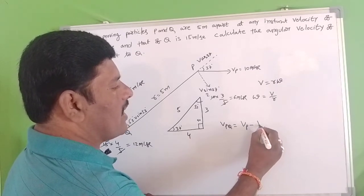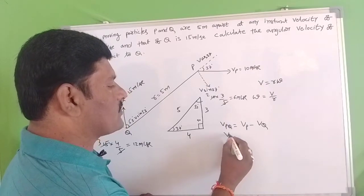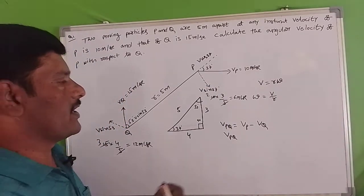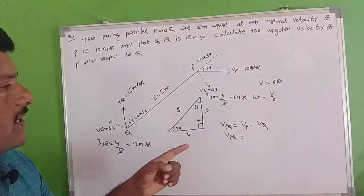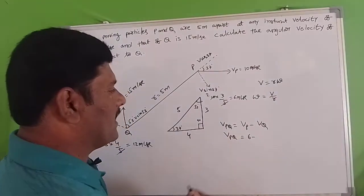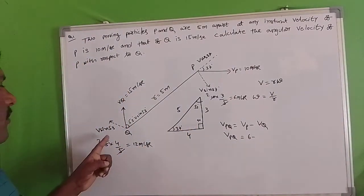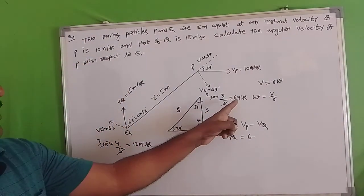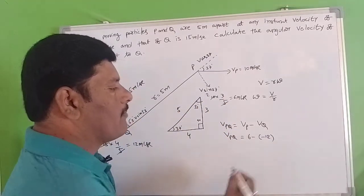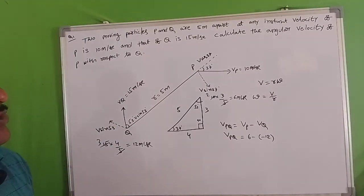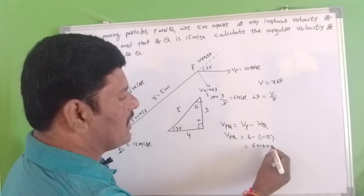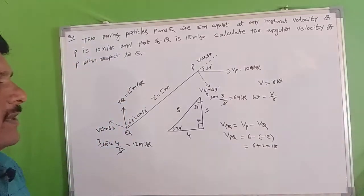Velocity of P with respect to Q: the perpendicular component of VP is 6 meters per second, and VQ value which is 12 meters per second. Since both are in opposite directions — P is downward, Q is upward — we add them: 6 plus 12 equals 18 meters per second.